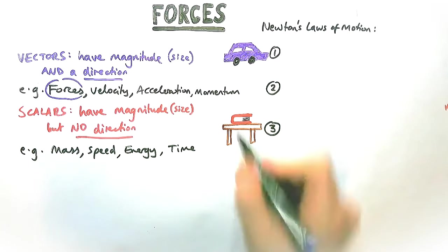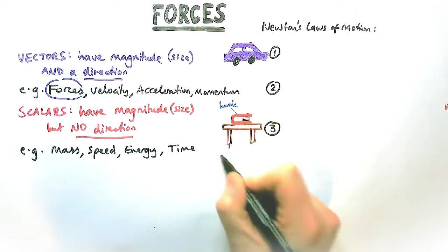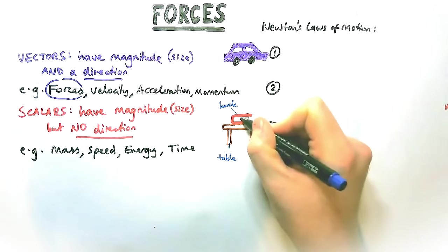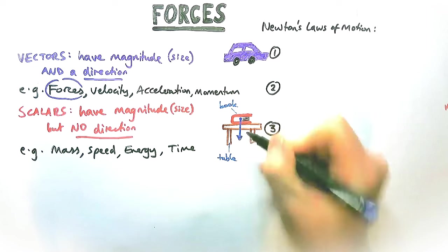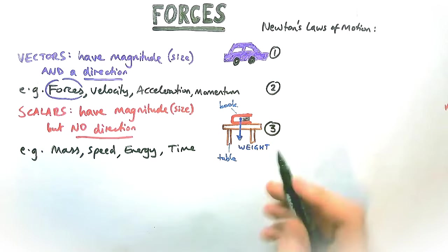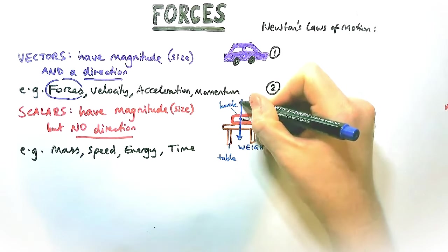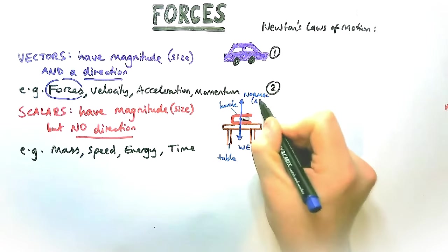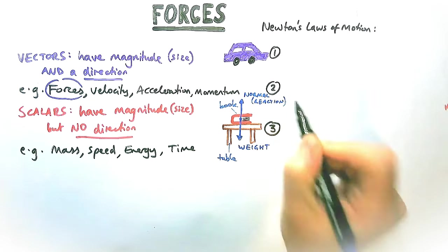For Newton's third law, we're going to talk about this book on the table. It could be anything resting on any surface. It's still, it's stationary, but that doesn't mean there aren't forces acting on it. We've got the book's weight acting downwards, or gravity producing the book's weight acting downwards. If it was just that force, it would fall through the table. So to balance it, there needs to be another force acting opposite to it. We call that the normal or the reaction force. Both names are absolutely valid.